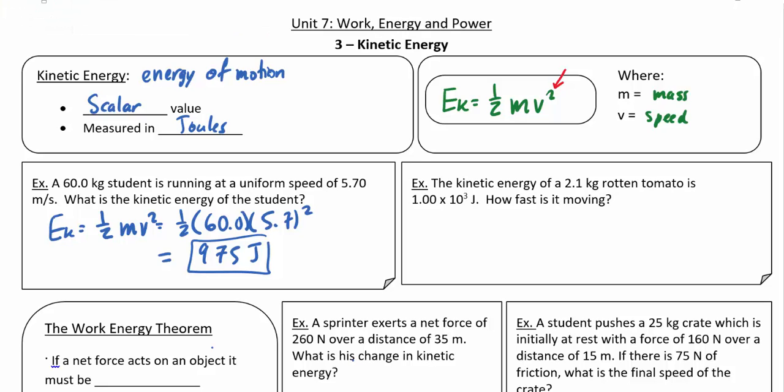Another example. The kinetic energy of a 2.1 kilogram rotten tomato is 1,000 joules. How fast must it be moving? Well, Ek equals one half mv squared. I'm not going to step through the algebra, I'll leave that up to you. But when you solve for v, v ends up equaling the square root of 2 times Ek divided by m. Note that the square root is over this entire thing. So it's the square root of 2 times 1,000 divided by a mass of 2.1, and this ends up being right around 31 meters per second. That's a pretty impressive rotten tomato throw.